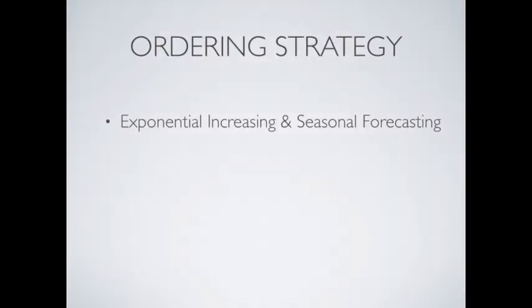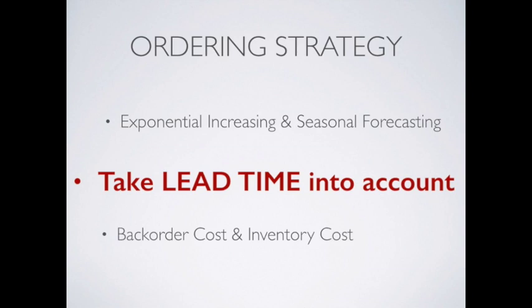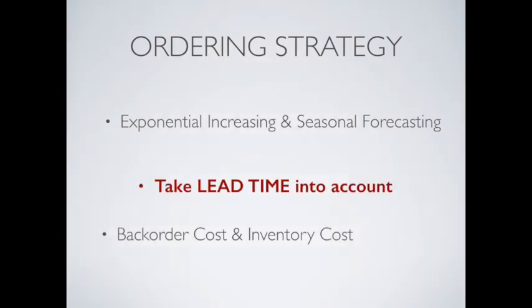So what is the successful strategy that helped them to win? First they employ the exponential increasing and seasonal forecasting methods learned in class. What's more they take the lead time of 2 weeks into the forecasting model. Actually the backorder and inventory cost can also affect the ordering strategy. Like in our game the inventory cost is $1 while the backorder cost is $5. It means that it will cost less to have inventory than backorder. If we swap the two cost figures then they tend to have backorder than stock products.